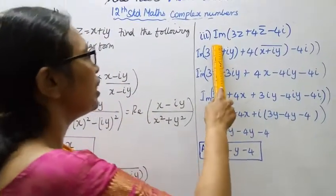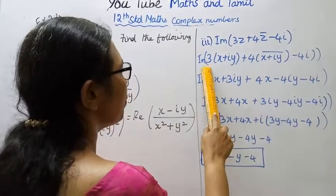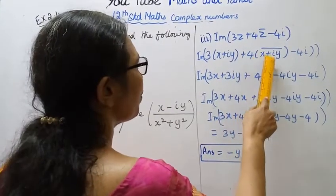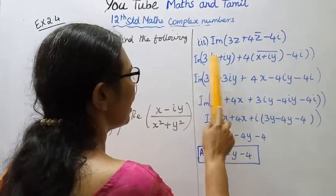Find the imaginary part of 3z plus 4z bar minus 4i. Imaginary part of 3 times (x plus iy) plus 4 times (x plus iy) bar minus 4i. Expanding: 3x plus 3iy.